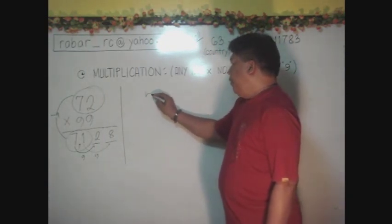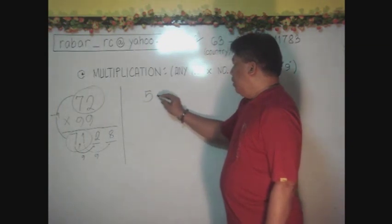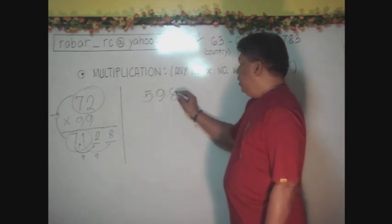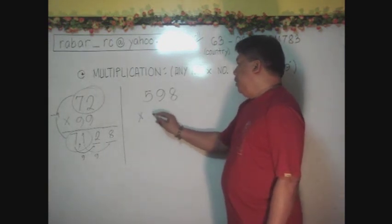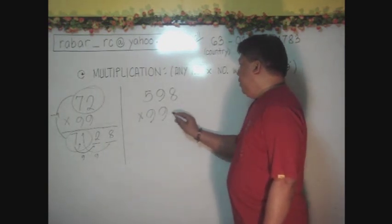We have here 598, a bigger number. Then, multiply it by 999.